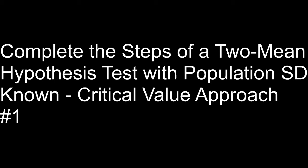This video is on the objective: complete the steps of a two-mean hypothesis test with population standard deviations known. This is the critical value approach. You're testing about the difference between two independent population means. The fact that the standard deviations are known tells us we're eventually going to be using a normal distribution — our test statistic will be a z-score and not a t-score.